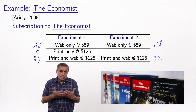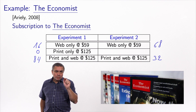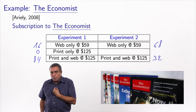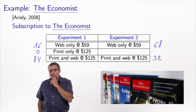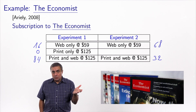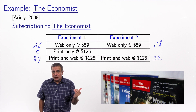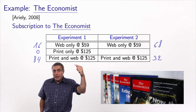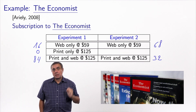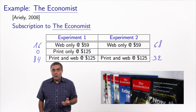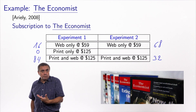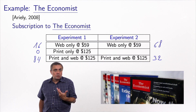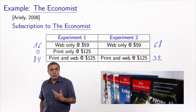So why does this happen? The presence of the dominated alternative changes people's perception of the choice context. They think: print-only is $125, so print-and-web at $125 may be a very good deal because I get more for the same price. It changes the perception of the value of the printed option. In the second experiment, without that reference, people simply compare web-only and print-and-web and may decide to save money by choosing web-only.